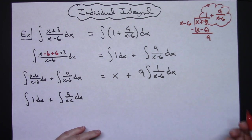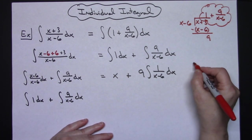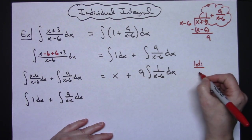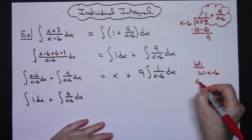And then for anybody that might need to see it, let's go ahead and do this as a u-substitution. So I can let my u be that x-6 which is in the denominator.